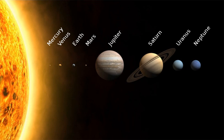Most large objects in orbit around the Sun lie near the plane of Earth's orbit, known as the ecliptic. The planets are very close to the ecliptic, whereas comets and Kuiper Belt objects are frequently at significantly greater angles to it. As a result of the formation of the solar system, planets and most other objects orbit the Sun in the same direction that the Sun is rotating, counterclockwise as viewed from above the Earth's north pole. There are exceptions, such as Halley's Comet. Most of the larger moons orbit their planets in this prograde direction, with Triton being the largest retrograde exception, and most larger objects rotate themselves in the same direction, with Venus being a notable retrograde exception.